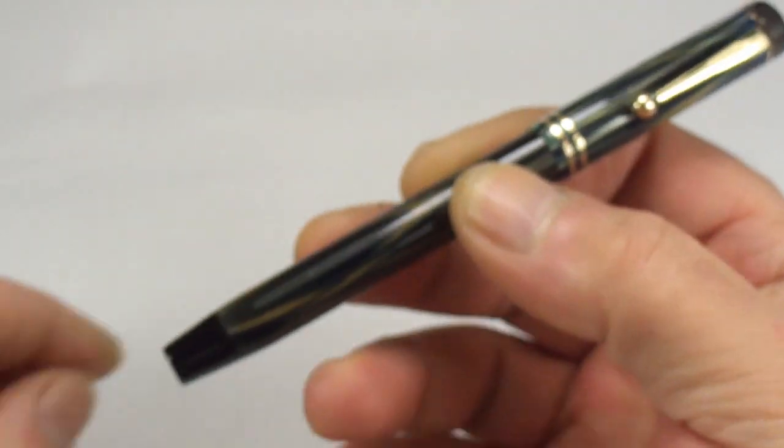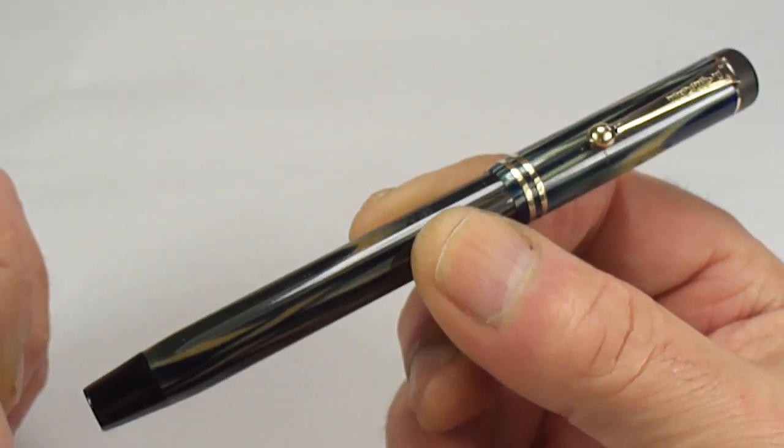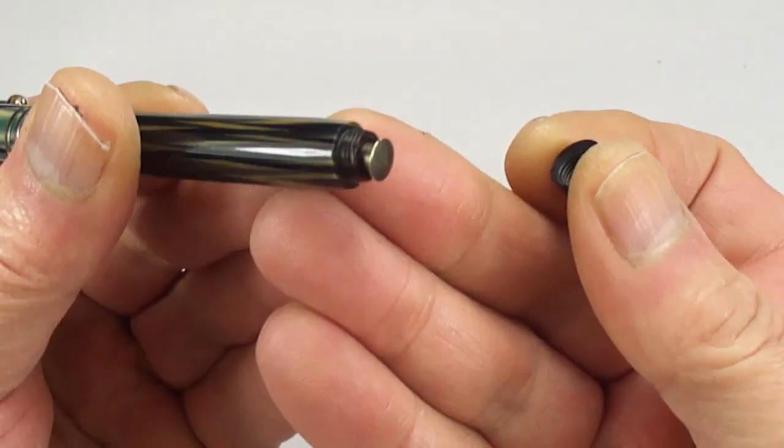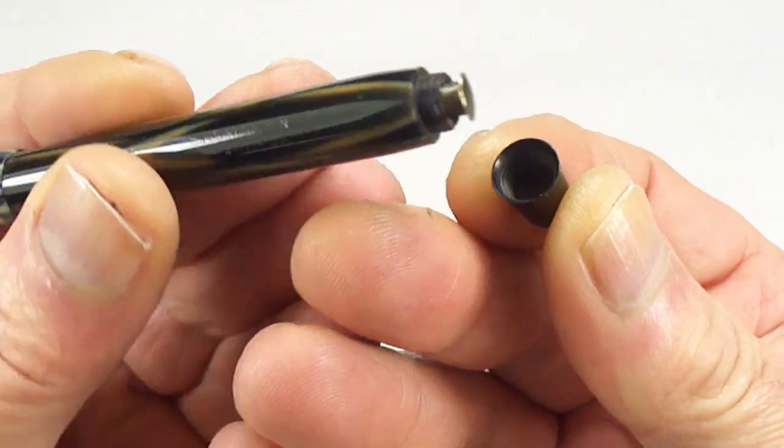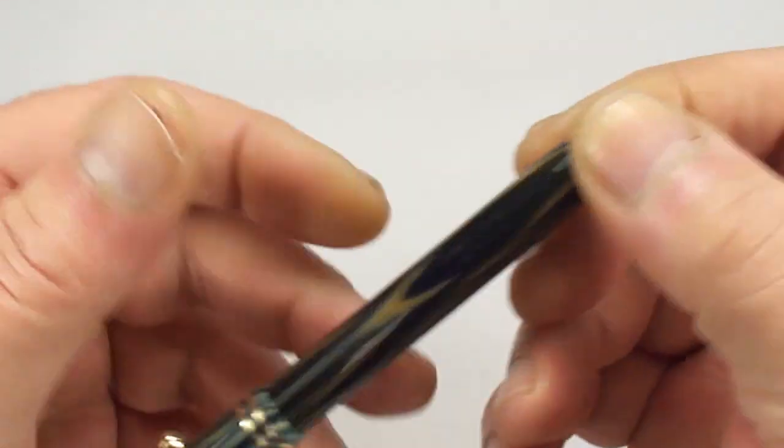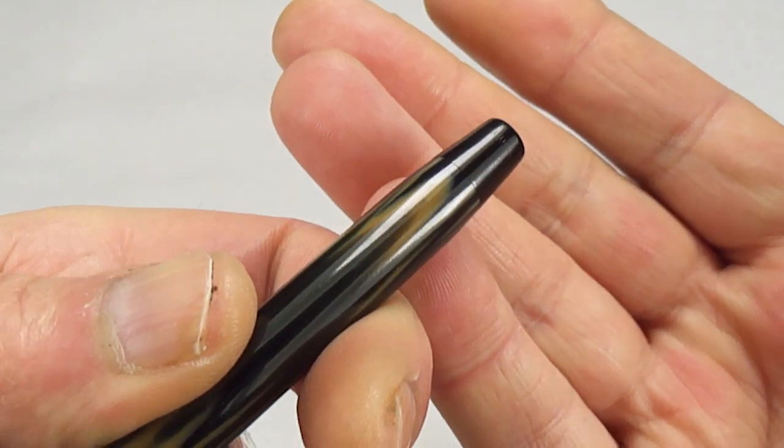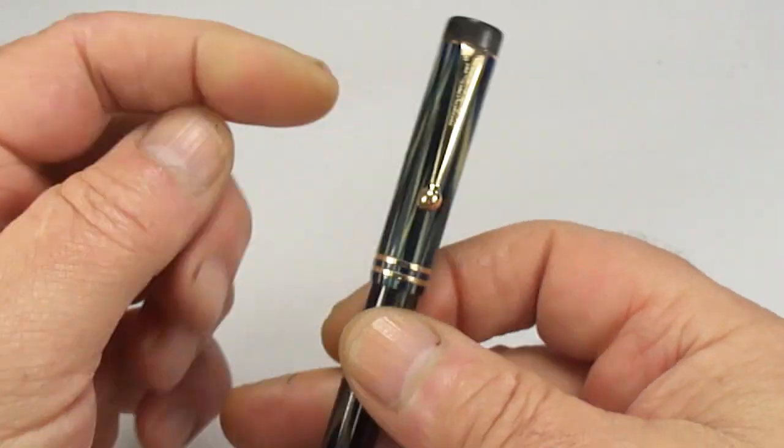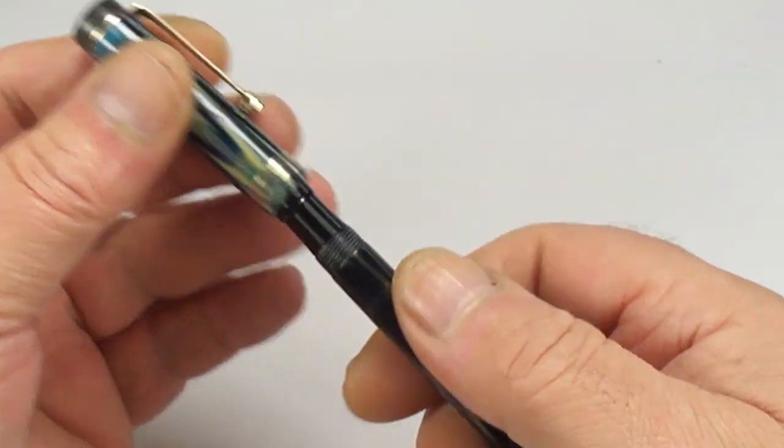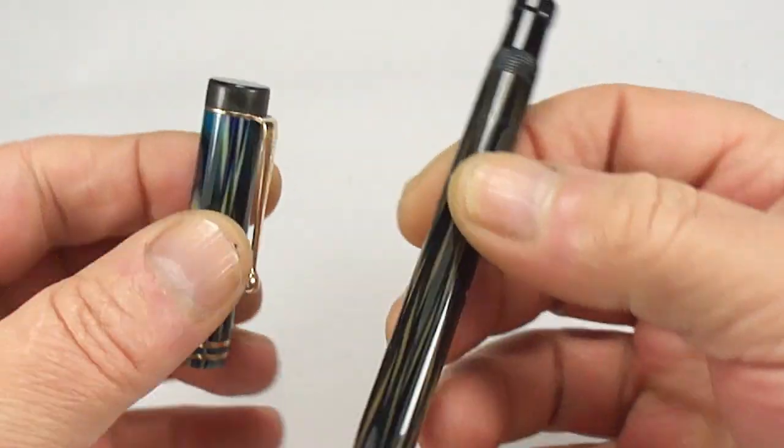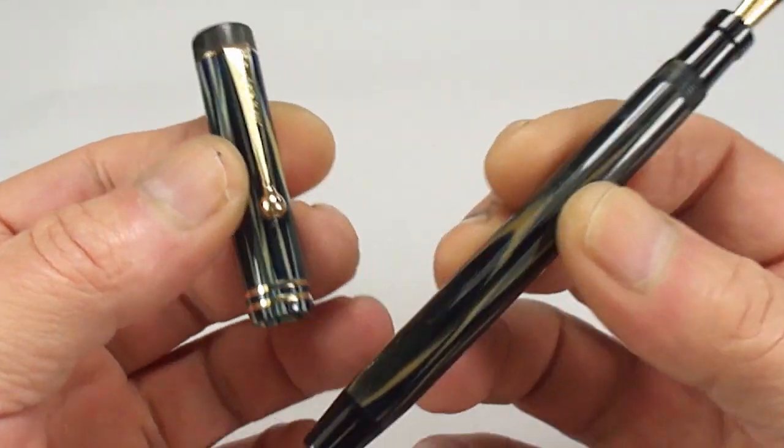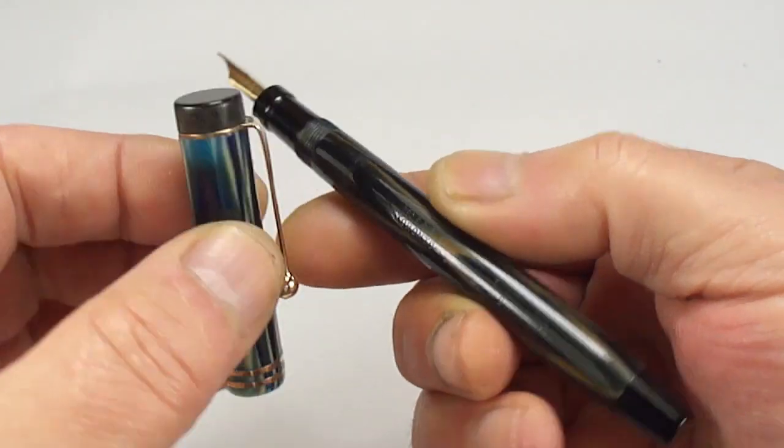As we showed you earlier, it's a button filler fountain pen with this blind cap. The blind cap looks to be a streamline version, which is the later model, although the flat top is the earlier model. Let's give you some customary twirls. These are quite slim, a long pen and quite slim.